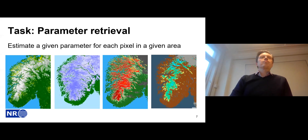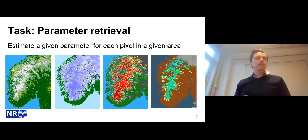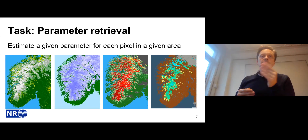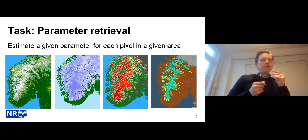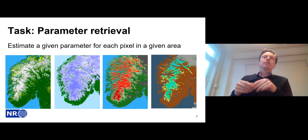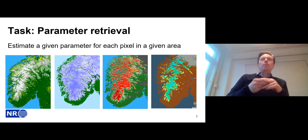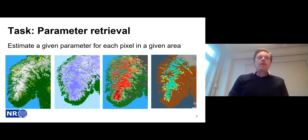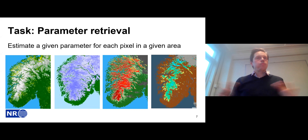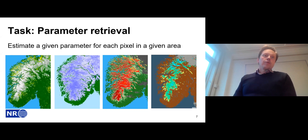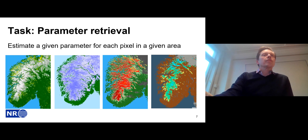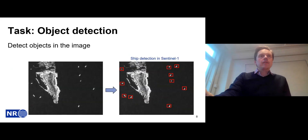Another task is parameter retrieval: estimating a given parameter for each pixel in an area, rather than a thematic category. For instance, we have looked at snow parameters — fractional snow cover, grain size, snow wetness — and we can extract these from satellite data. Other examples include forest height, forest cover, and chlorophyll measurements in lakes and oceans. These are widely used tasks in remote sensing.